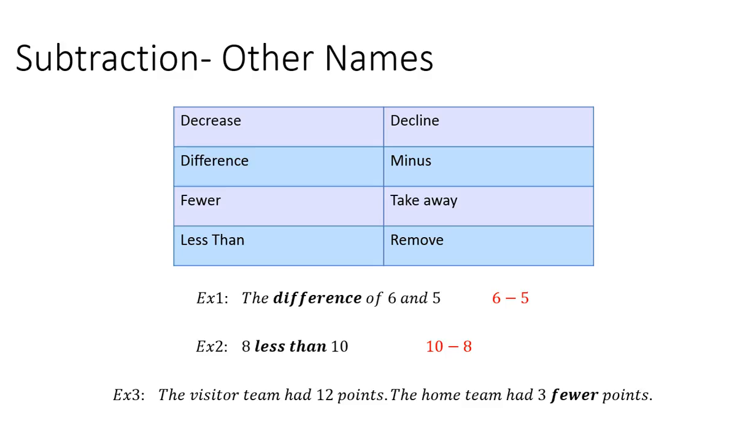In example 3, the visitor team had 12 points. The home team had 3 fewer points. So to figure out how many points the home team would have, you would subtract 12 minus 3.